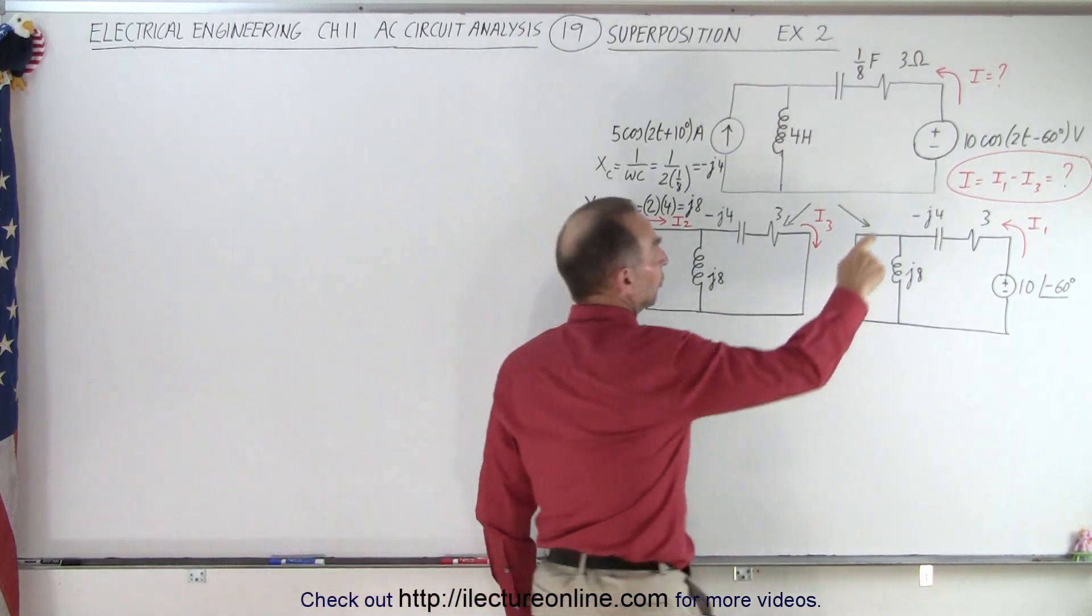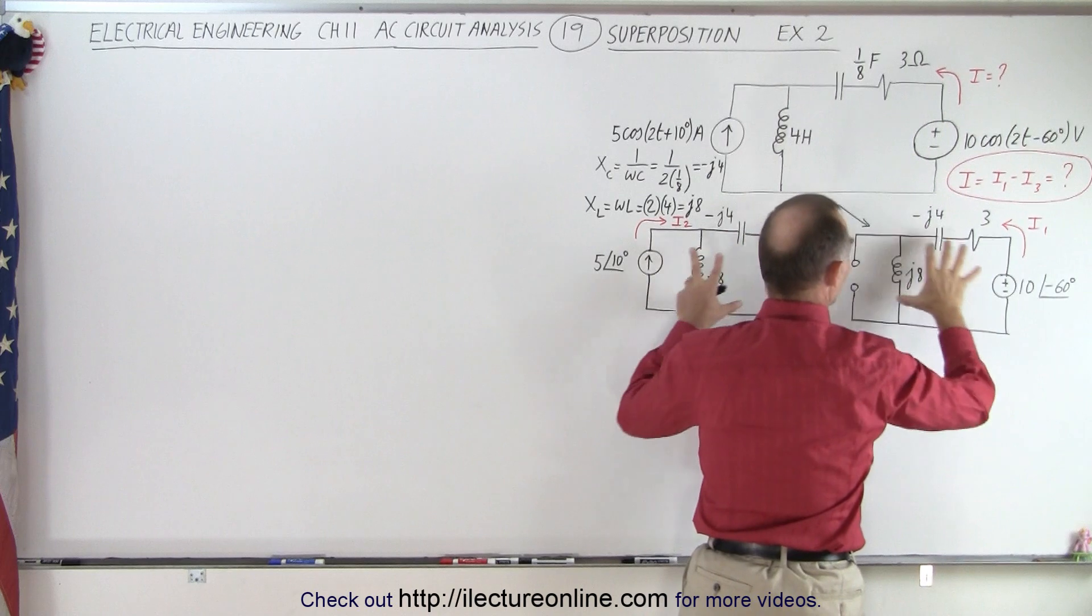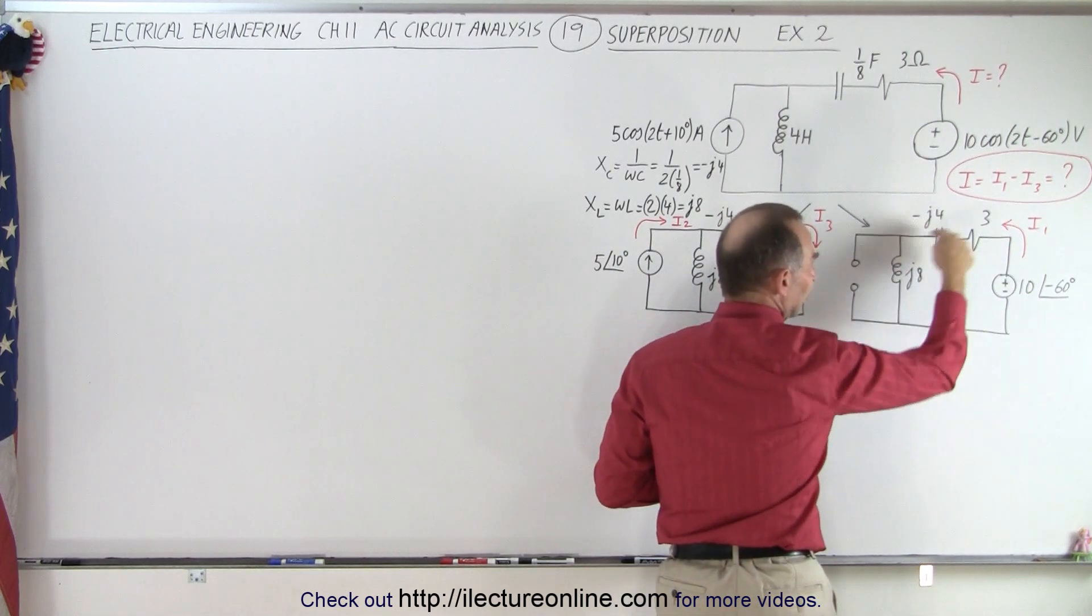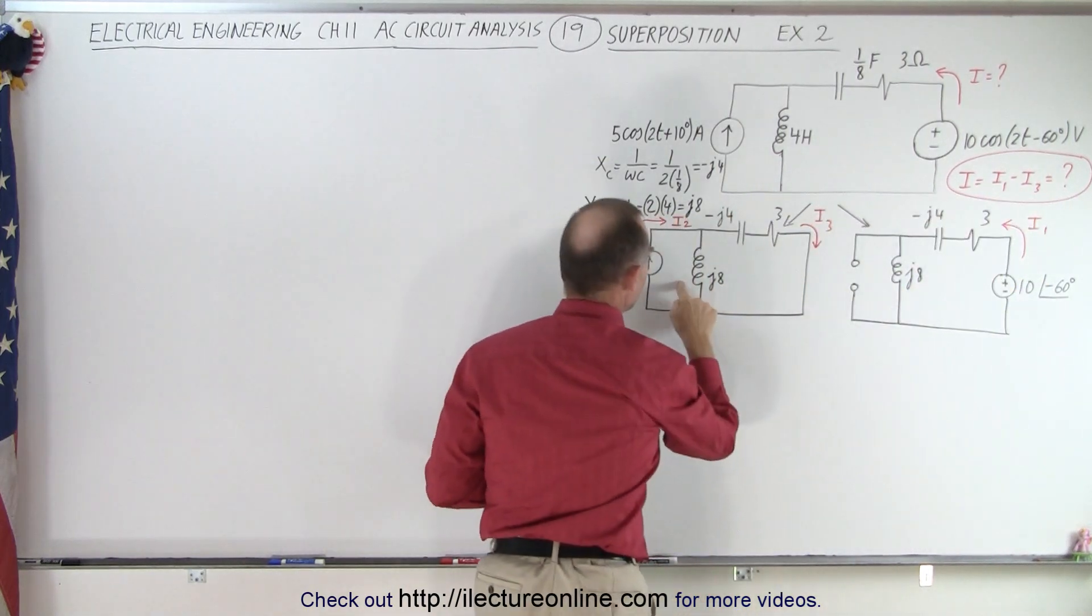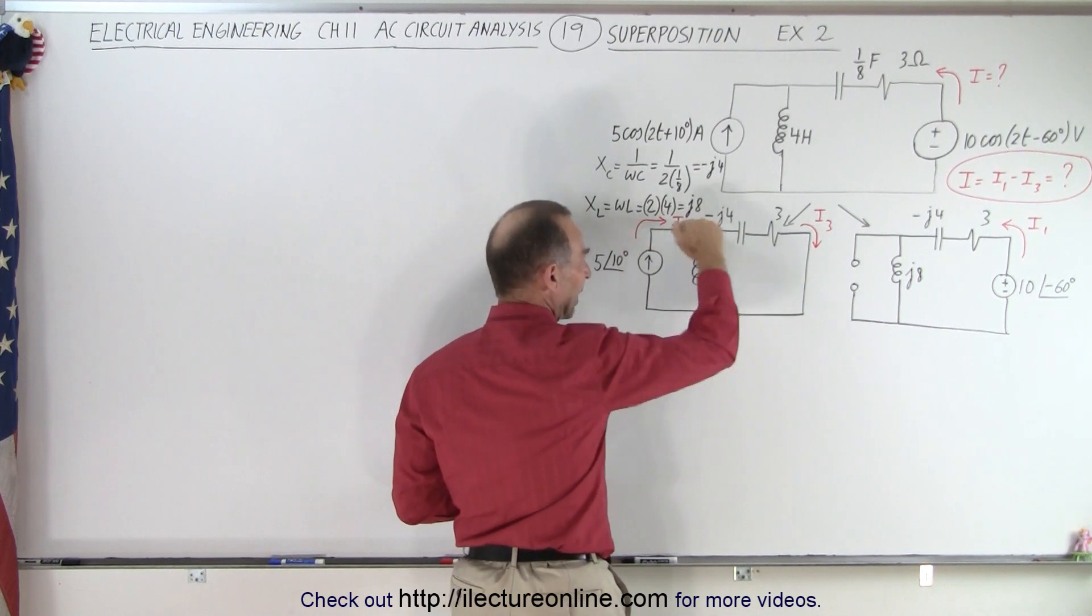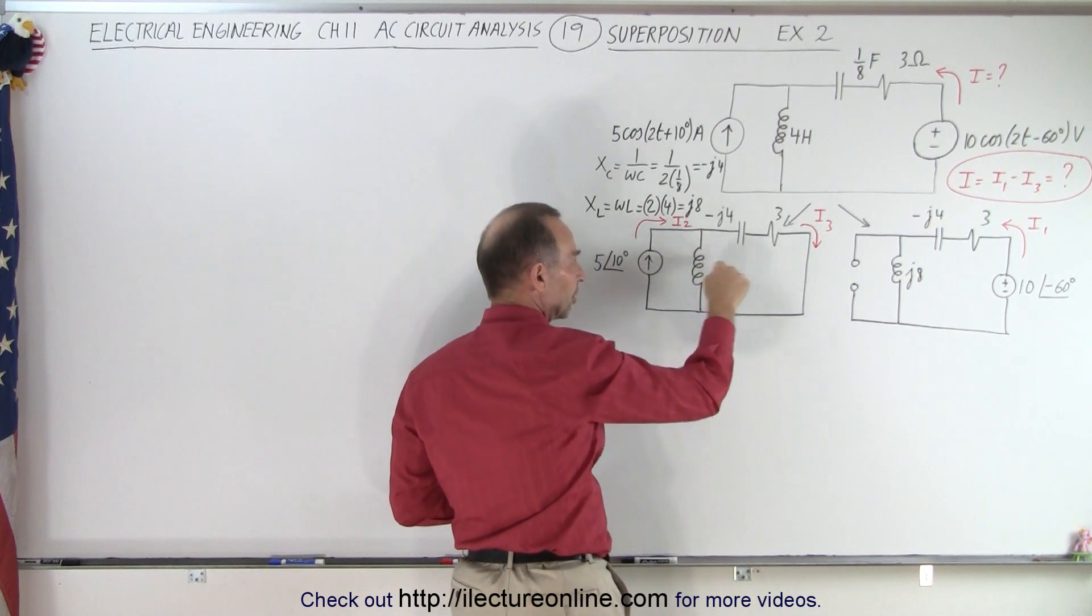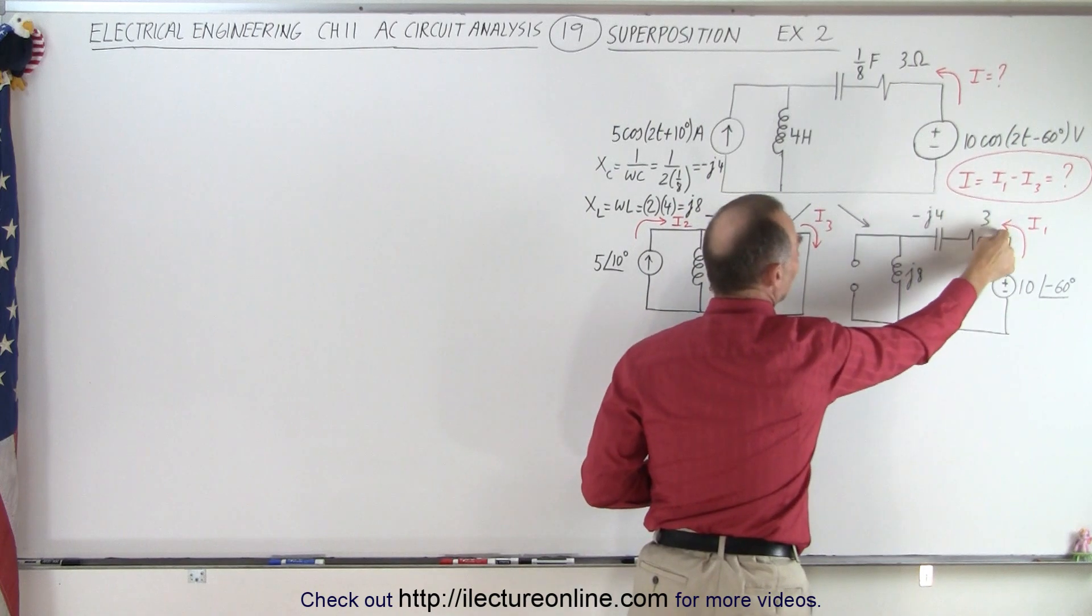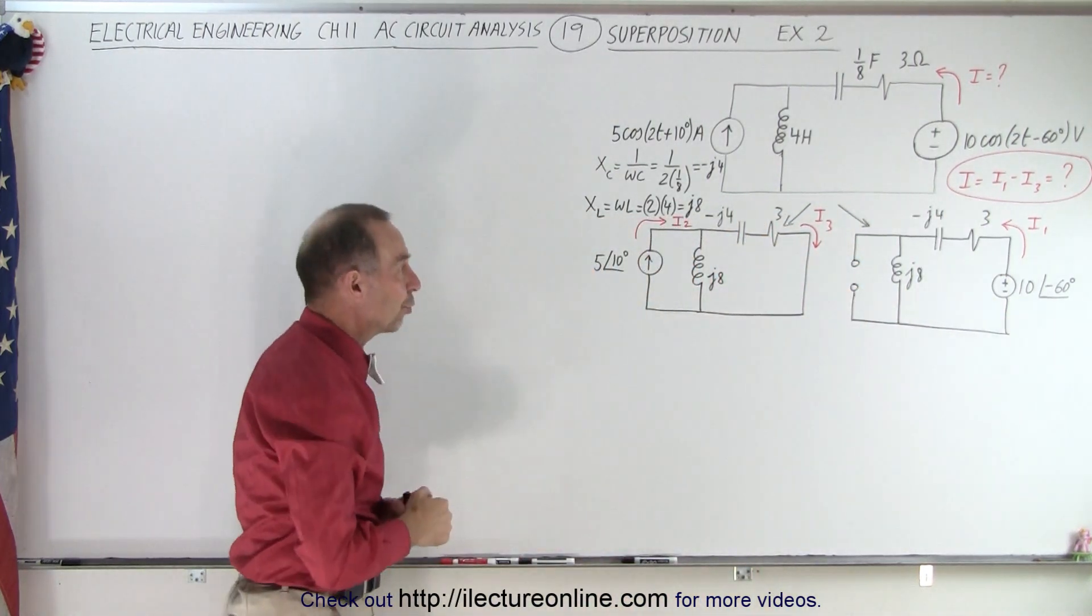Notice we're trying to find the current here, I. When we separate the two circuits, over here we have a voltage supply and a series circuit, so we want to get I1. Over here we have a current source that drives current into the circuit, there's a branch point, part goes this way, part goes this way. We care how much goes here, we call that I3, and eventually I will be I1 minus I3. Notice that I3 is in the opposite direction.